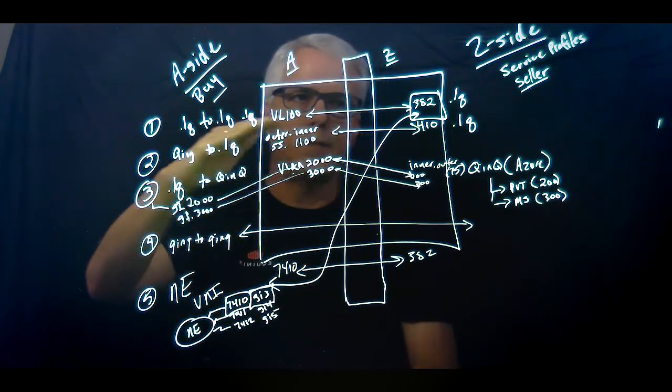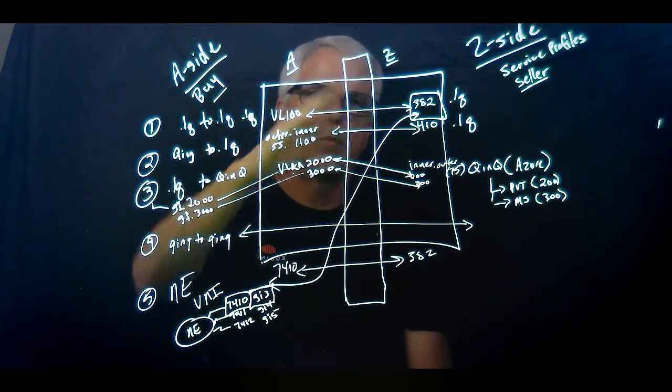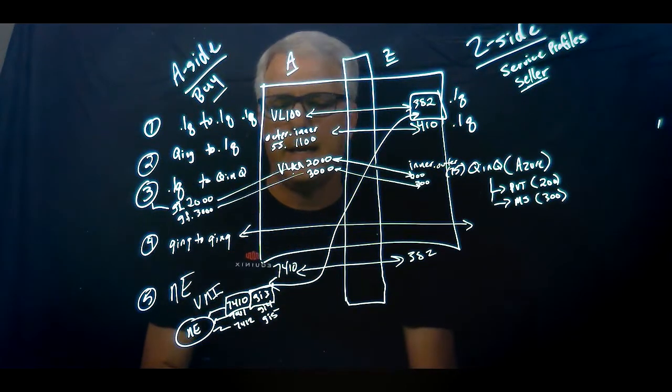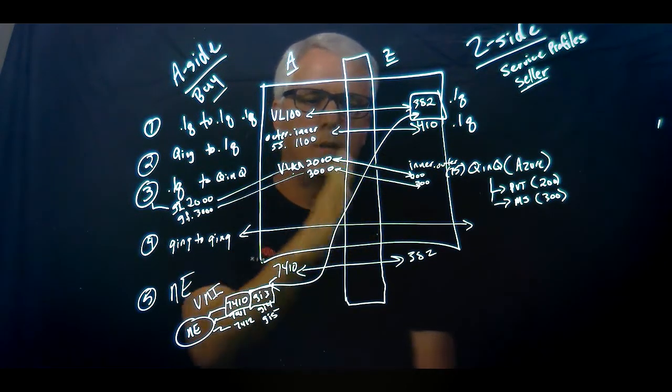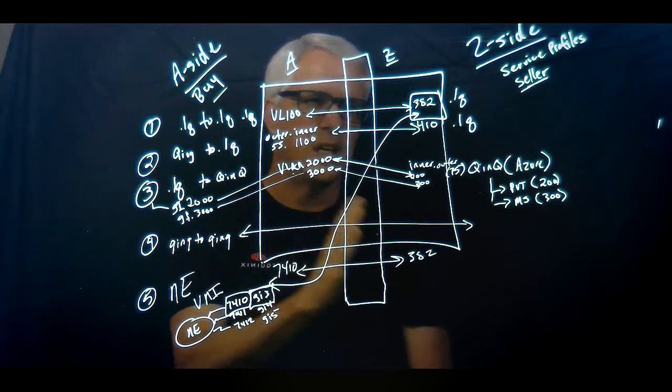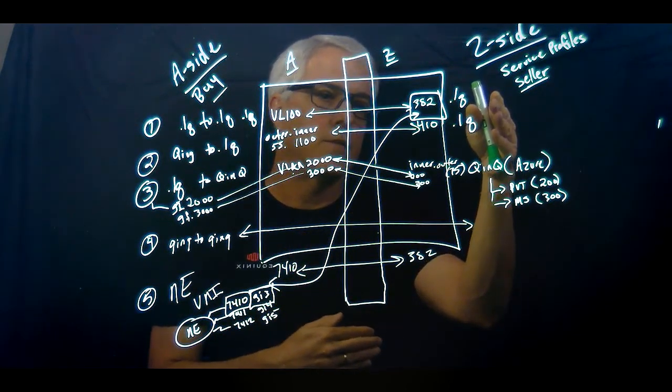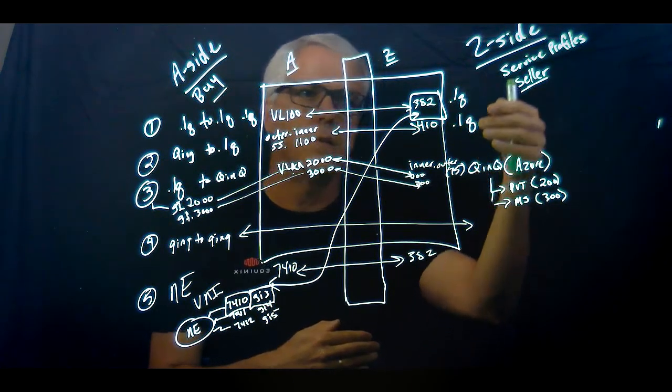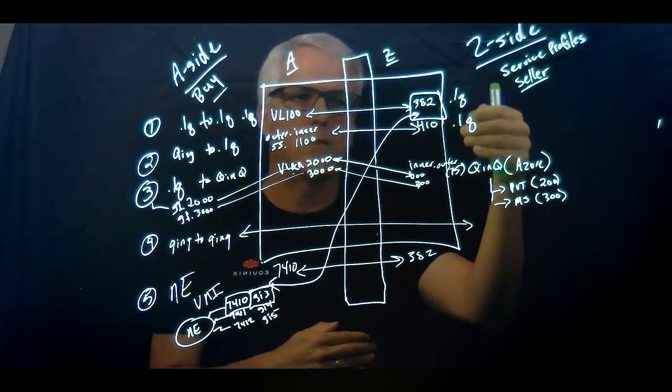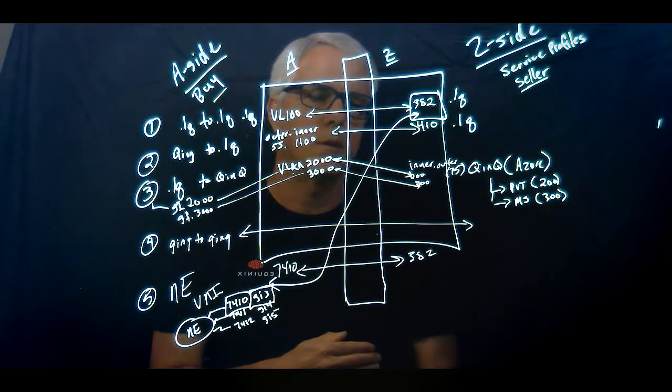So you really have to have a good understanding of what's going to flow from A to Z and how it's going to manipulate the VLANs in each one of these scenarios. Because it does get important, especially a Network Edge will bring your own connections. If they're Q&Q connections and you have to understand S-Tags and C-Tags or VLAN IDs if you're using .1Q instead of Q&Q.